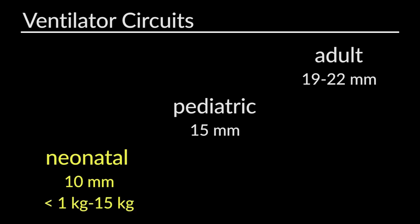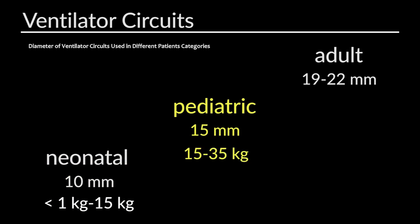The dual limb circuit is used with conventional ICU ventilators. In a dual limb circuit, one tubing carries gases towards the patient and another tubing carries the exhaled gases towards the exhalation port of the ventilator.